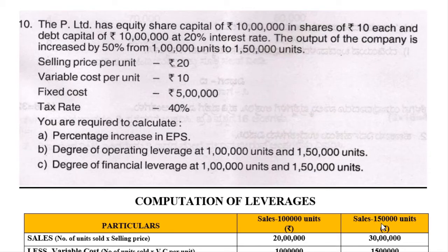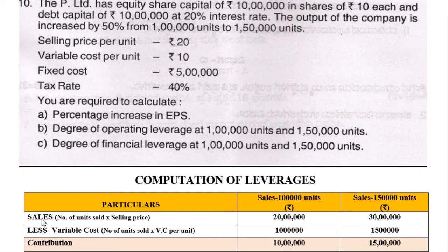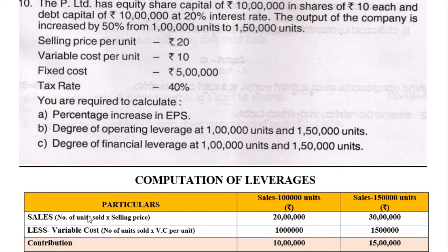There are two cases. Let us calculate sales first. Sales equals number of units sold multiplied by selling price. Case 1: 1 lakh units into rupees 20 gives rupees 20 lakh. Case 2: 1 lakh 50,000 units into rupees 20 gives rupees 30 lakh.